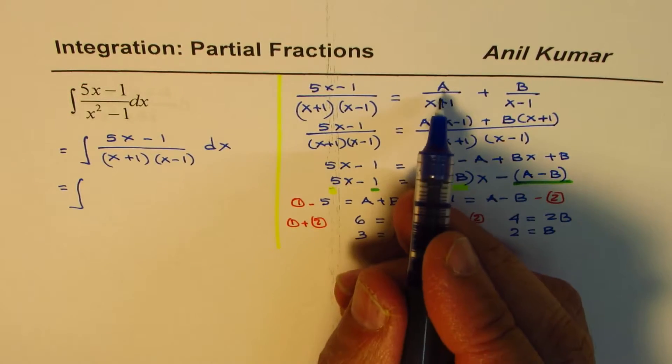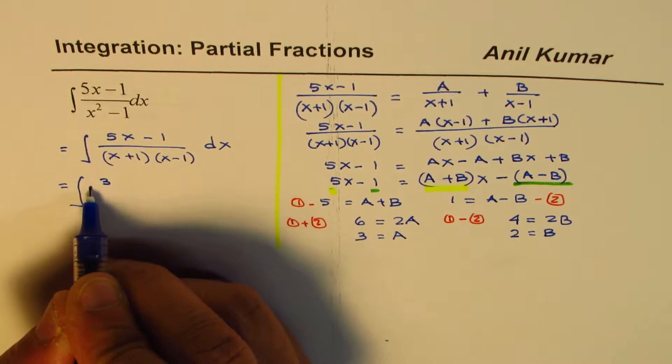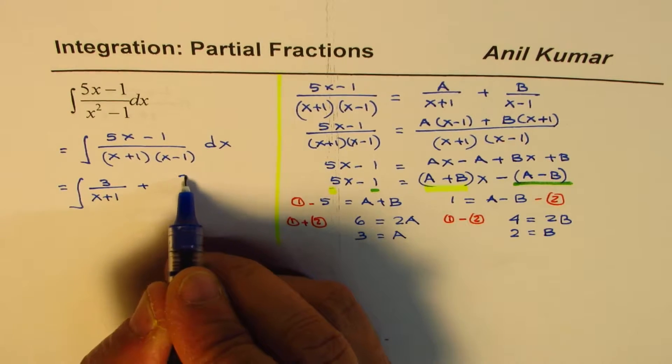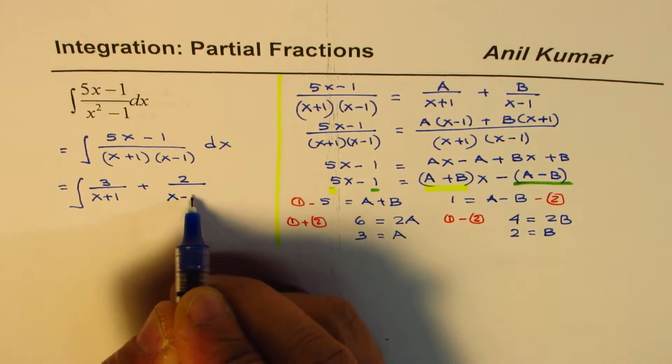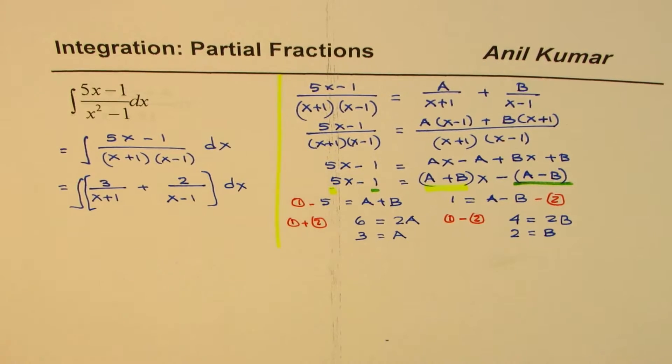So now it becomes, instead of A, I'm going to write 3. So we have 3 over x plus 1, and then B is 2, so plus 2 over x minus 1 dx.